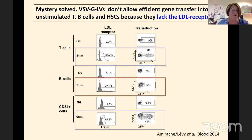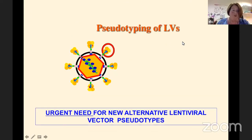However, when we strongly stimulate these cells — except for B cells — we are able to achieve very nice transduction. What we would like to do, though, is to transduce these resting cells, because they would persist much longer in vivo. That's why we definitely need another pseudotype — we need to exchange VSV-G for the glycoprotein of another virus.